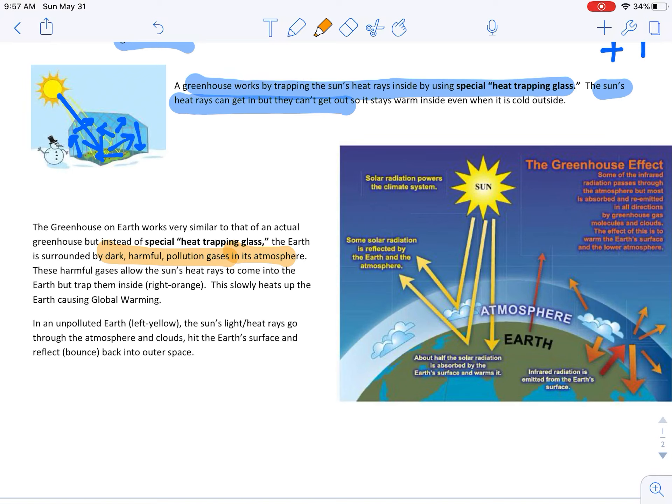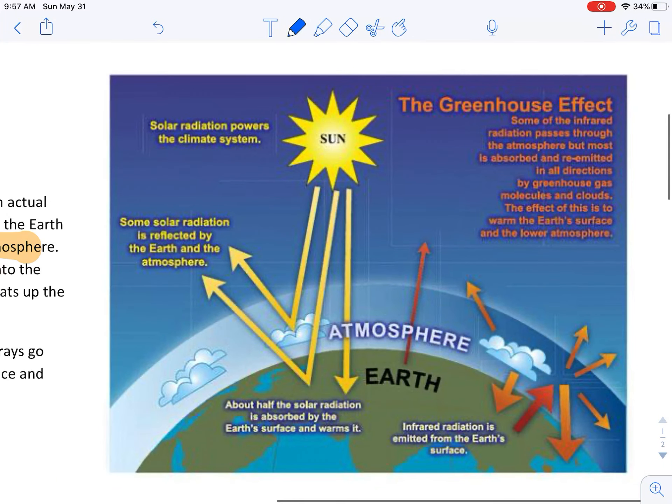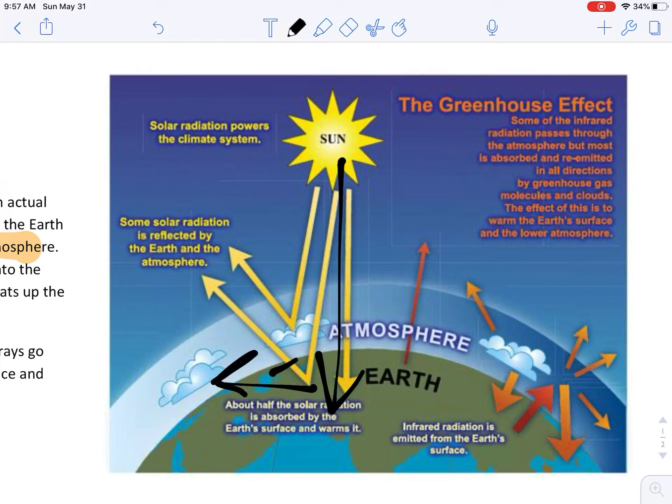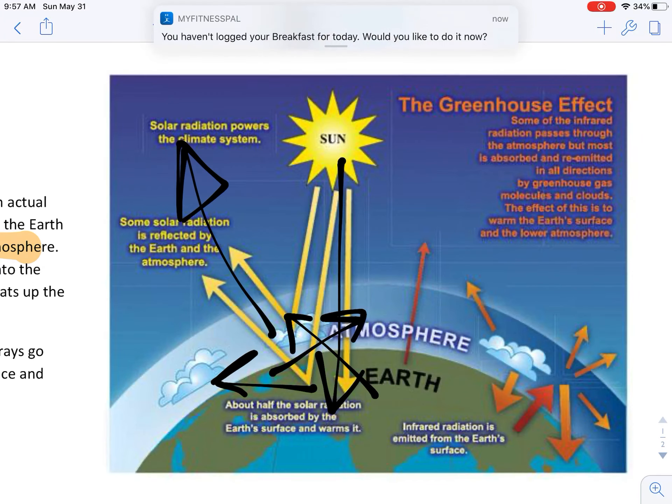Now, let me just show you how this works with a picture. We'll do it in black. In an unpolluted earth, this is what normally happens. The sun's rays come in. They hit the earth. They bounce around a little bit. They heat the earth up. And then they say, all right, I'm out of here. And they go back up and they bounce out into outer space. This is what normally happens. Sun's light comes in, heats it up, and then leaves. It does its duty for the day, and then it leaves.